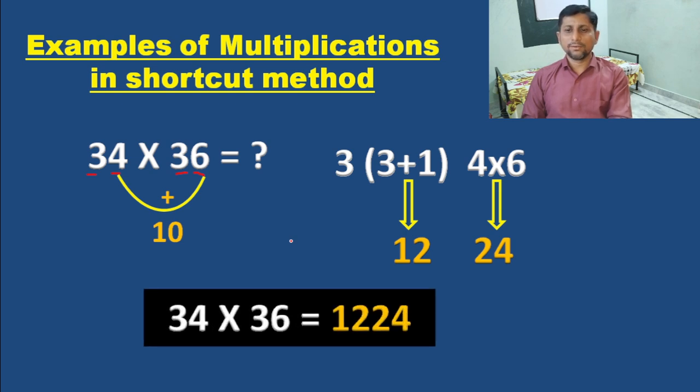The answer is 1224. Just combine and write the numbers - we will get the answer: 34 into 36 equals 1224. In the shortcut method, we have to remember two things. First, verify whether the unit digits sum is 10 or not. Second, the tens place digits should be equal. Then we apply this shortcut method for multiplication.